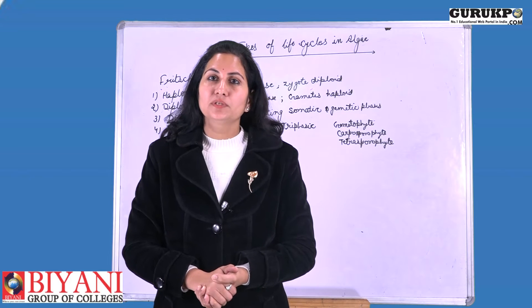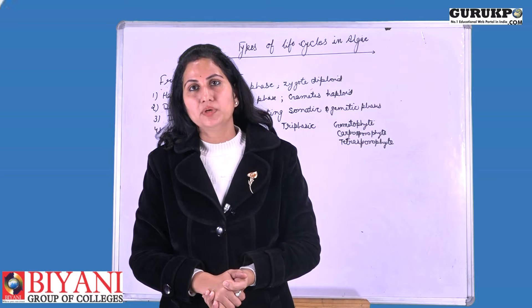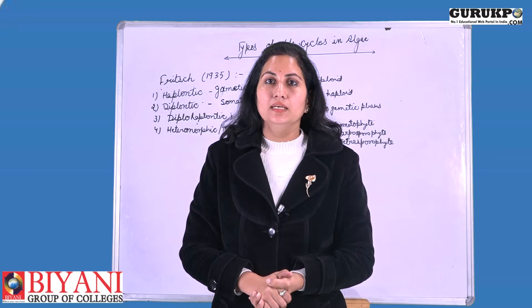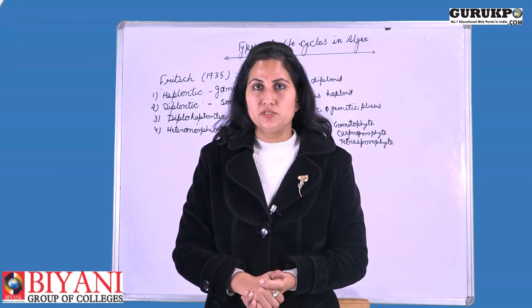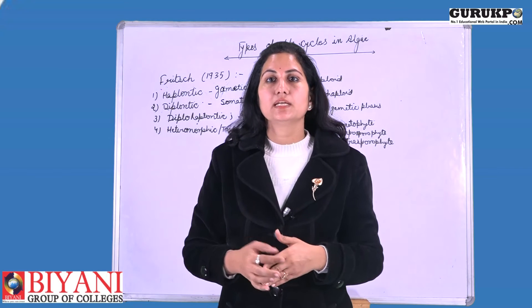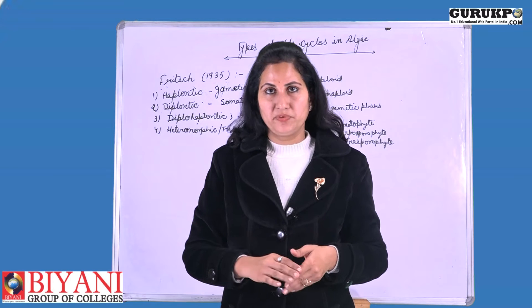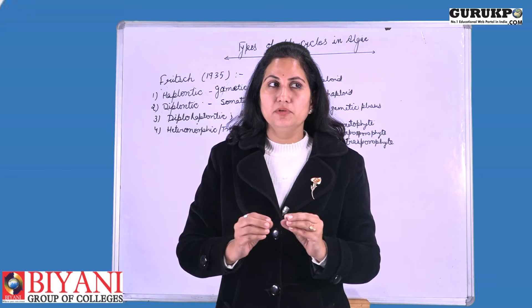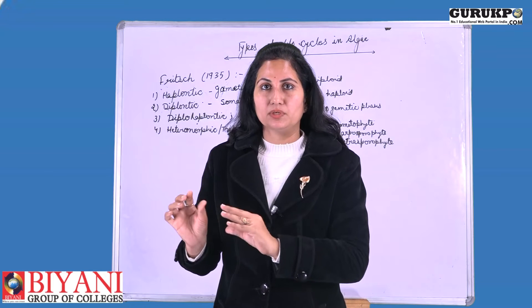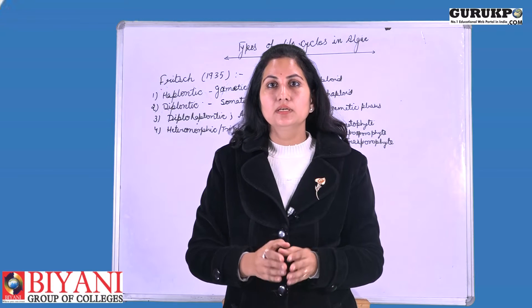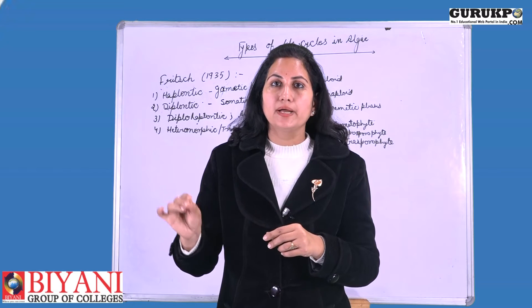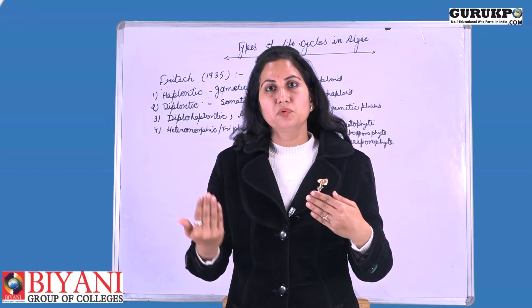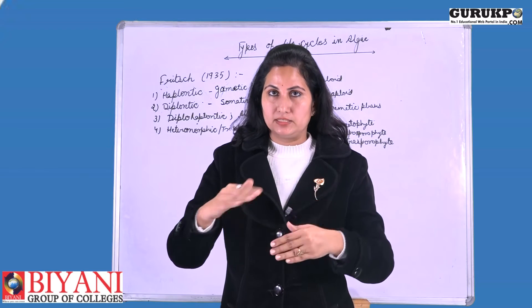Today we are going to discuss about the different life cycles which are found in algae. We all know that in algae there are two types of generations: one is the sporophytic generation and the other is the gametophytic generation. The gametophytic generation is the haploid generation in which the gametes are formed, which are N in number, and in the sporophytic generation the zygote is formed, which is diploid. So in algae the gametophytic generation and sporophytic generation alternate with each other.